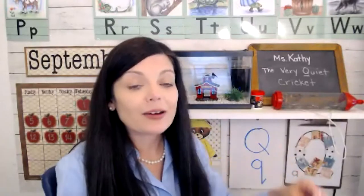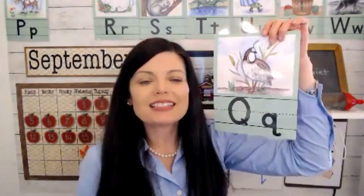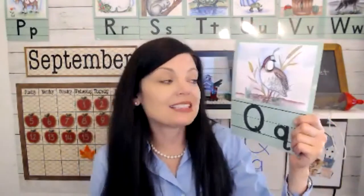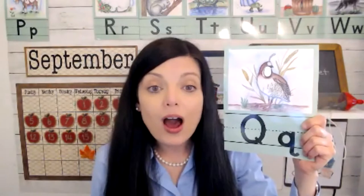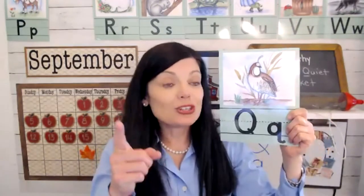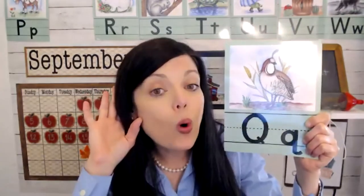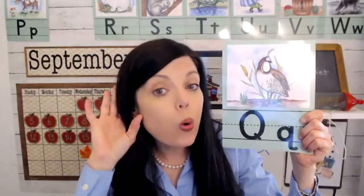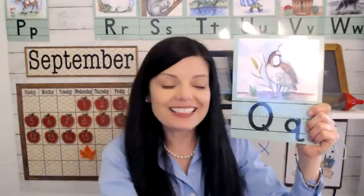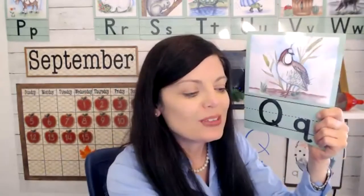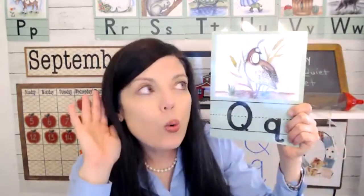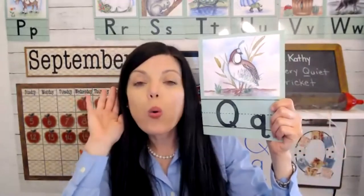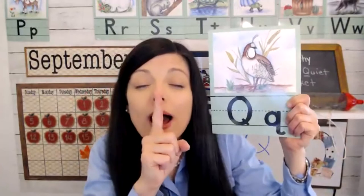Now we're going to do some phonics. We know what letter Q looks like and we know how to write it. Phonics is just learning what sound letter Q makes, and Q makes this sound: quah, quah, quah. Can you try to make that sound? Quah, quah, quah. Good job. Let's do it again — Q says quah, quah, quah, as in quiet. And that's our hand motion for letter Q: put your finger on your lips and pretend you're saying shh, quiet.